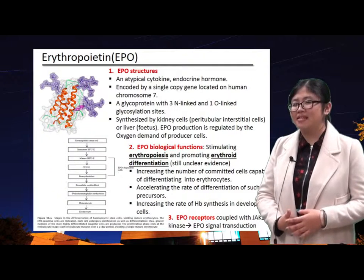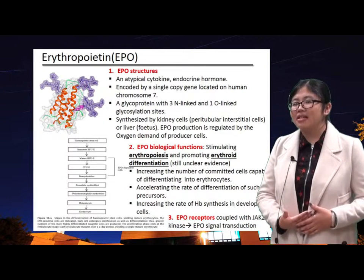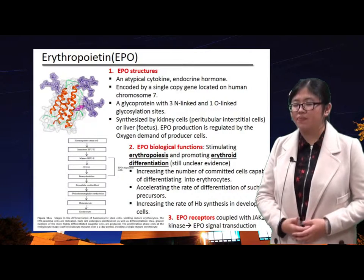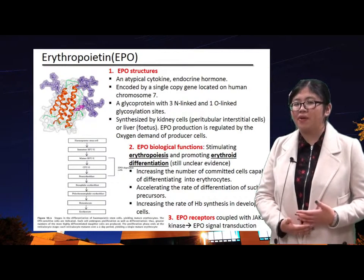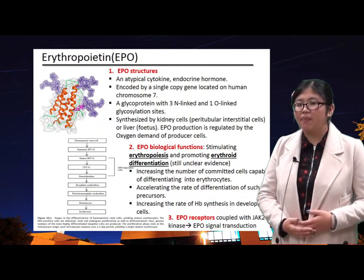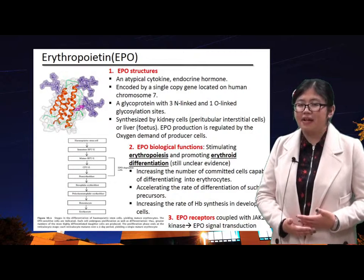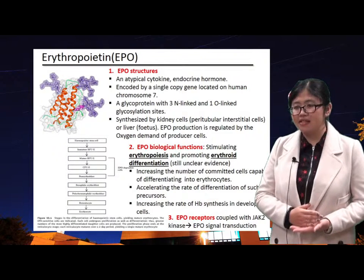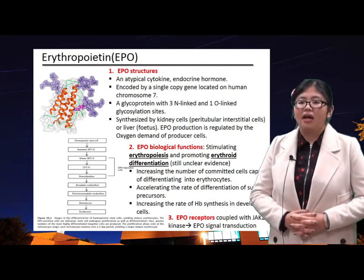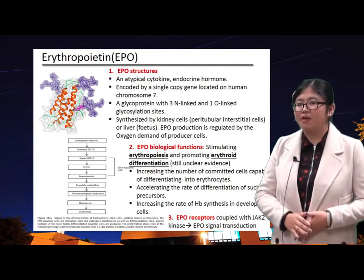Erythropoietin is synthesized by kidney cells; in fetuses, it is synthesized by liver cells. In general, EPO production is regulated by the oxygen demand of producer cells. Regarding its biological functions, EPO stimulates erythropoiesis and promotes erythroid differentiation. It increases the number of committed cells capable of differentiating into erythrocytes, accelerates the rate of differentiation of such precursors, and increases the rate of hemoglobin synthesis in developing cells. EPO receptors are coupled with JAK kinase to help generate EPO signal transduction.